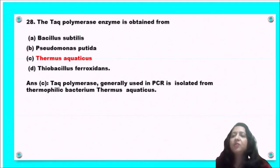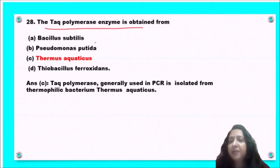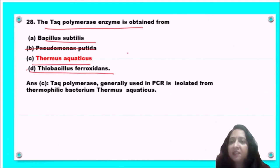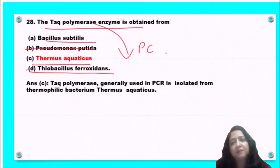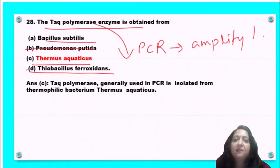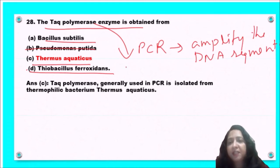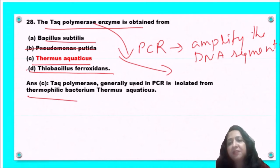Next question: the Taq polymerase enzyme is obtained from Bacillus subtilis, Pseudomonas putida, Thermus aquaticus, or Thiobacillus ferrooxidans? Taq polymerase is used in PCR to amplify DNA segments and is isolated from the thermophilic bacterium Thermus aquaticus. So option C, Thermus aquaticus, is the correct answer.